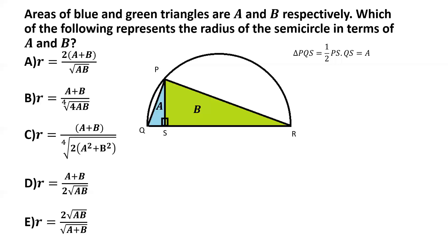And similarly, we can write the area of triangle PSR as half its altitude PS multiplied by its base SR. And that's given as B.